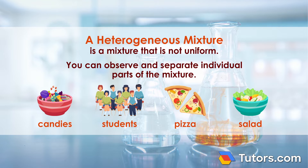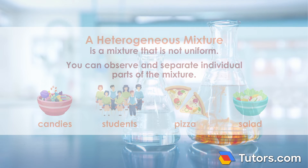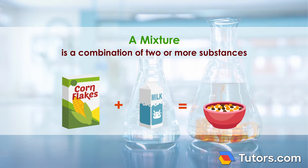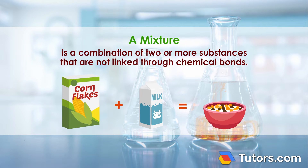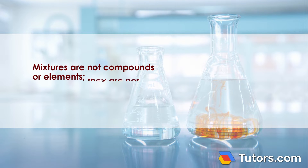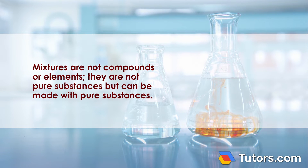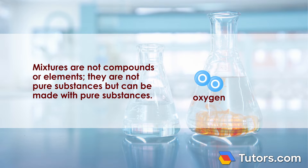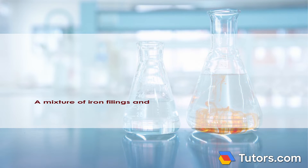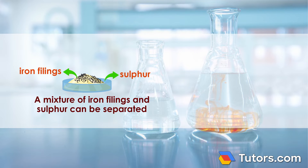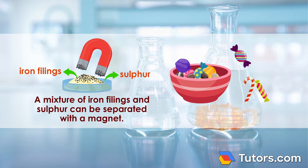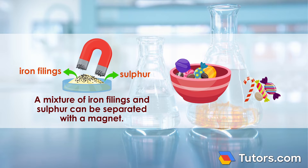Heterogeneous mixtures contrast with homogeneous mixtures. A mixture is a combination of two or more substances that are not linked through chemical bonds. Mixtures are not compounds or elements. They are not pure substances, but can be made with pure substances, like when oxygen is removed from the air to be bottled and provided to health organizations. A mixture of iron fillings and sulfur can be separated with a magnet. That bowl of hard candies? You can pick out what you like and leave behind unwanted ones.